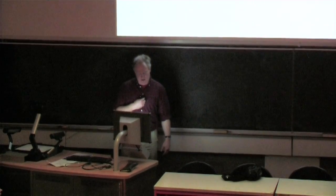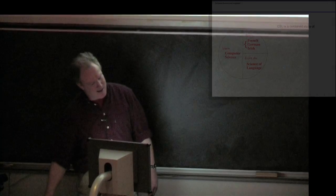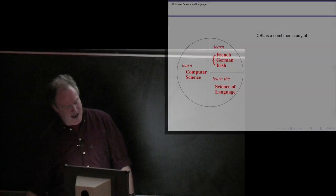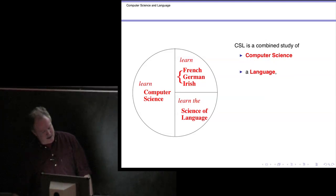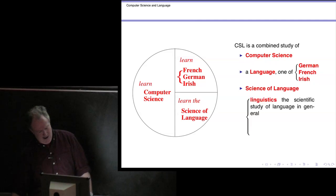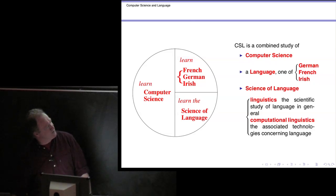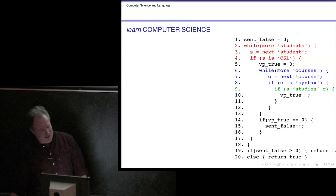Welcome everybody, thanks for coming along. I'd like to try and explain a little bit about the Computer Science and Language degree program. That little diagram gives you a first idea: it combines the study of computer science, the study of a particular language — that might be German, might be French, or it might be Irish — and the study of the science of language, which is linguistics, and computational linguistics, which is really technologies associated with language. That's the spectrum of things covered by Computer Science and Language, or CSL.